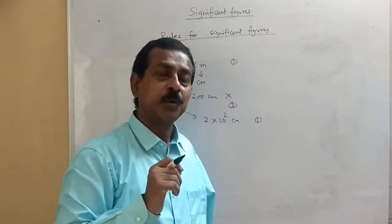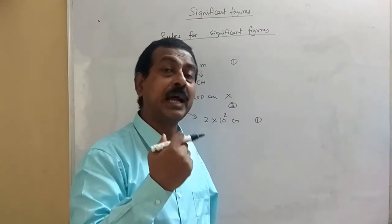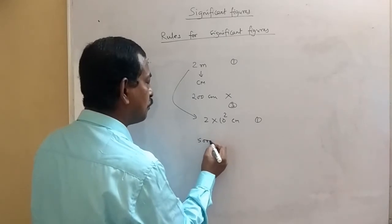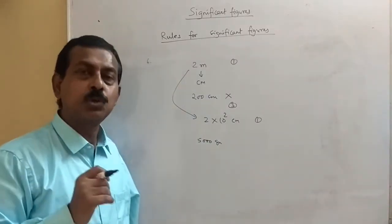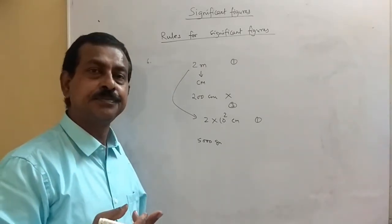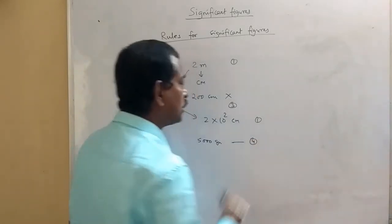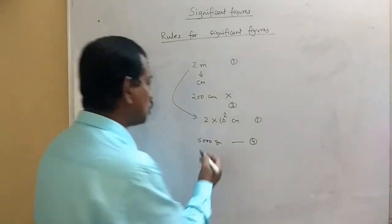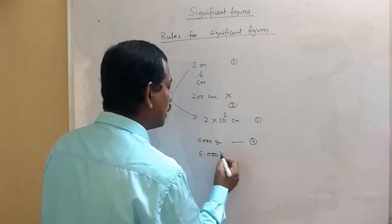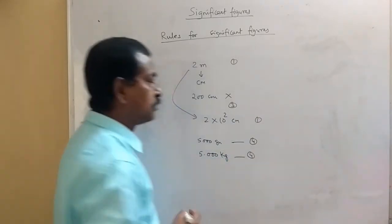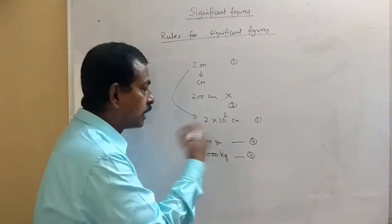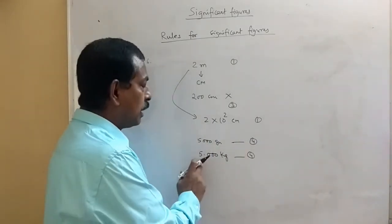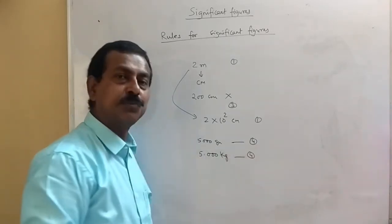This is also the reason why we take the power of 10 as non-significant. Similarly, if it is 5000 grams and I want to express it in kg, it should be written as 5.000 kg, so the number of significant figures will be 4. We should not write 5000 g as simply 5 kg. Both 5.000 grams and 5.000 kg have 4 significant figures.